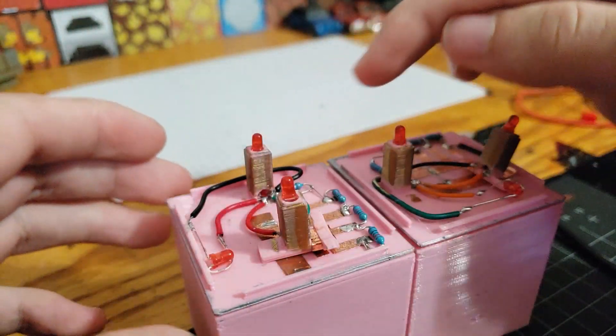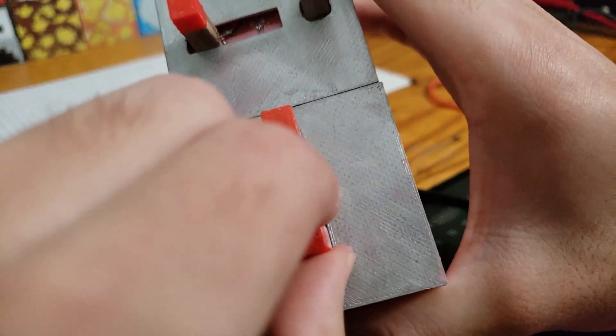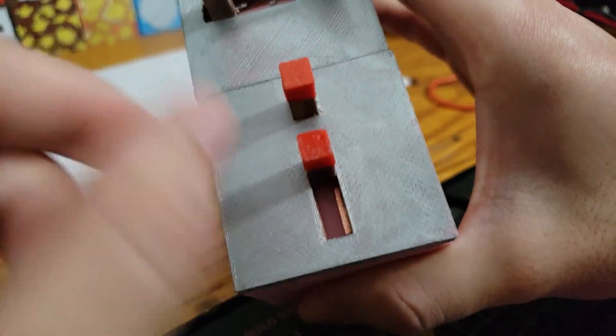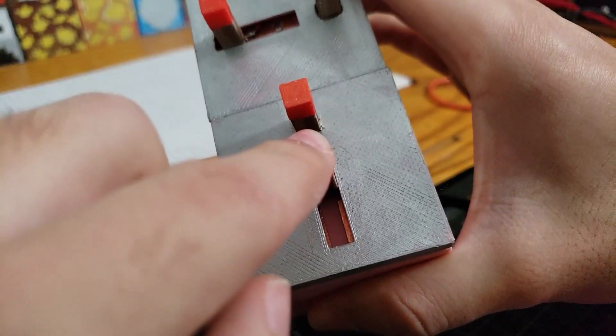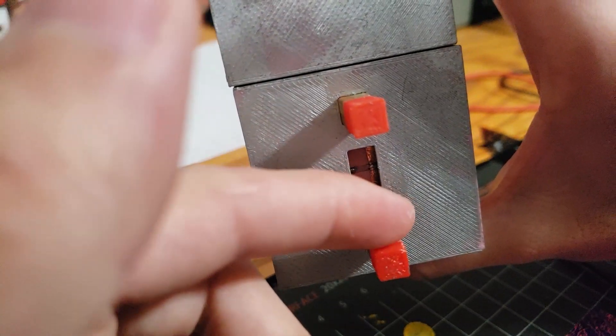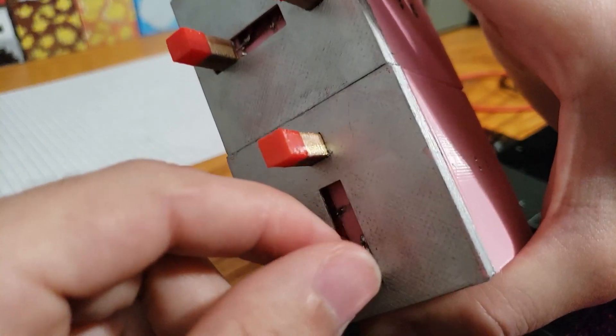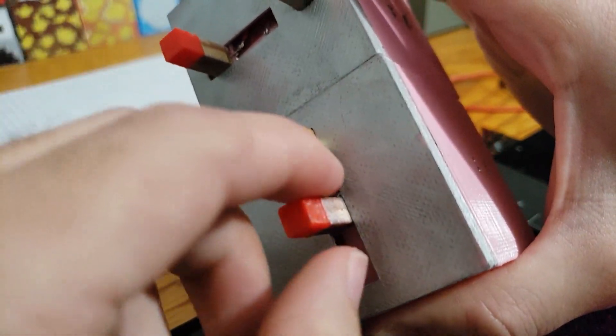Copper foil tape can be pretty finicky, so even if you have it aligned just right, it still might not make contact until you press down on it. In order to add more pressure, I recommend just adding more foil tape on the middle. That'll allow more pressure to be put on those pads, allowing for better contact.